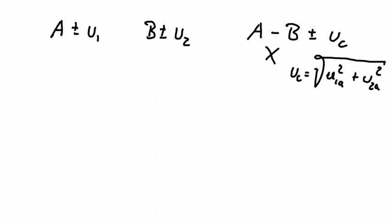But this uncertainty here shows a certain distribution. What does that mean? Well, if we've got this value here, it means we have anything from A minus U1 to A plus U1. And likewise, for B, we have anything from B minus U2 to B plus U2.